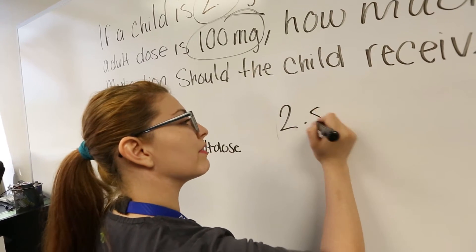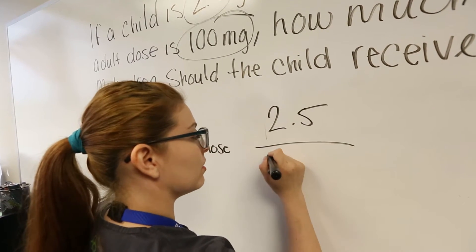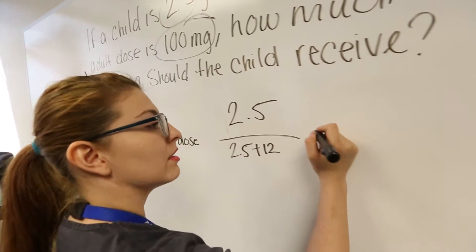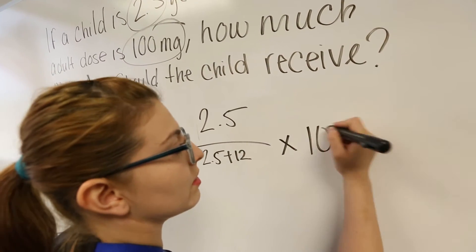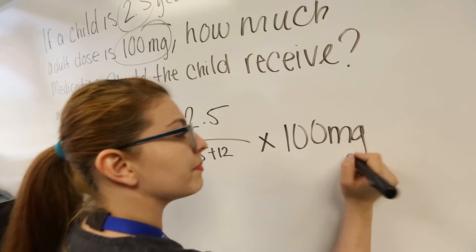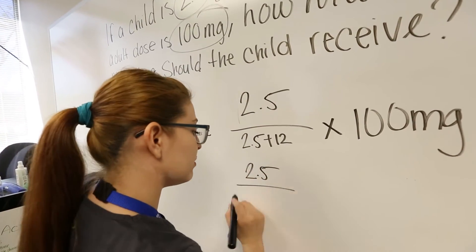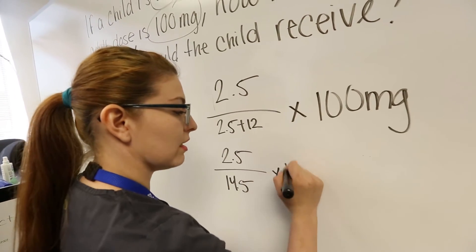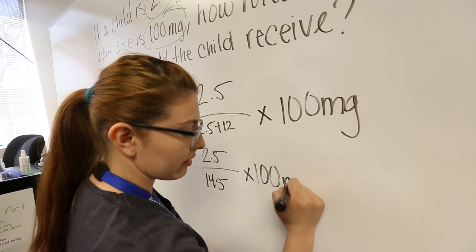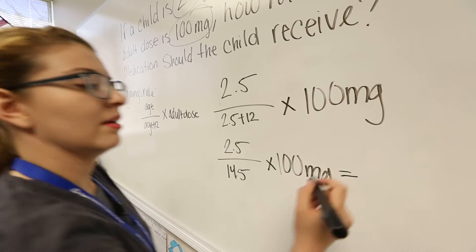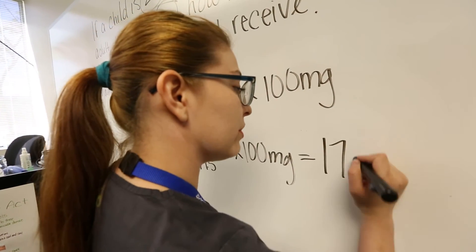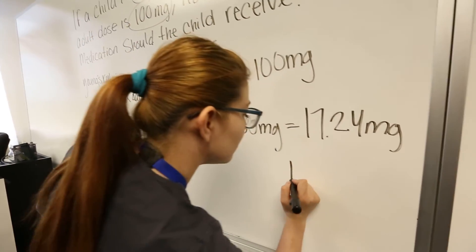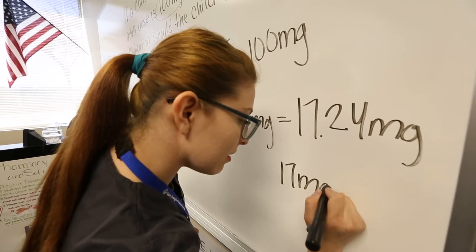So 2.5 over 2.5 plus 12, times 100 milligrams. That's 2.5 over 14.5 times 100 milligrams, which equals 17.24 milligrams, and we round that to 17 milligrams.